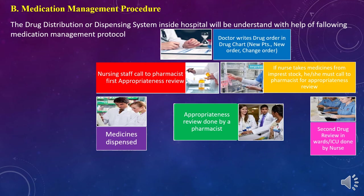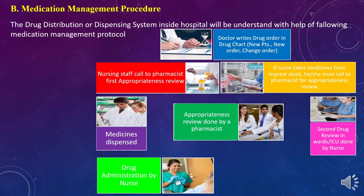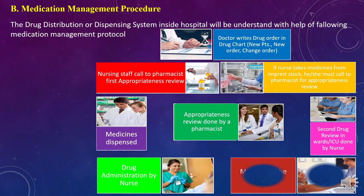The second drug review is carried out inside the ward or ICU by the nursing staff. After proper confirmation, the nursing staff administers the medicines to the patient — this is the fourth component, drug administration. After administering, they stay with the patient for a period of time to monitor vitals observed after every drug administered. This whole process is called the medication management procedure related to medication use inside the hospital.